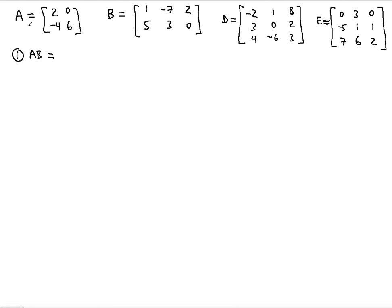Notice that A is a 2 by 2 matrix — 2 rows and 2 columns. The first number denotes the number of rows and the second number denotes the number of columns. B is a 2 by 3 matrix: 2 rows and 3 columns. The product is only possible if the inner numbers are the same. If they were not the same, the product AB would not be possible.